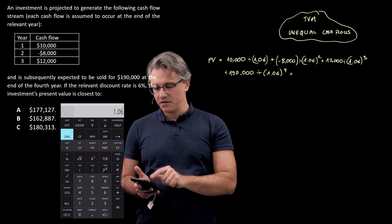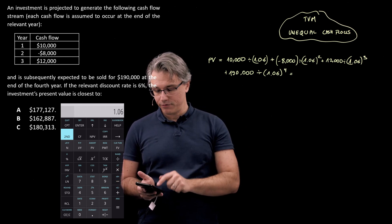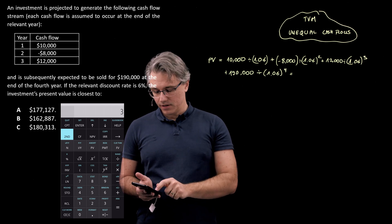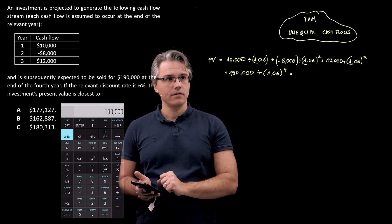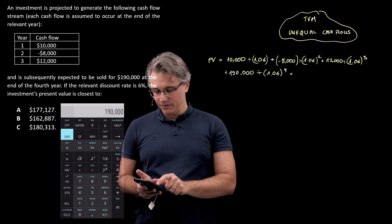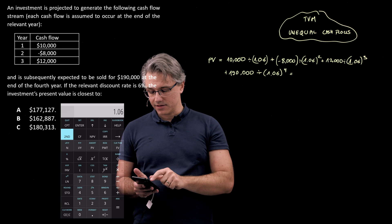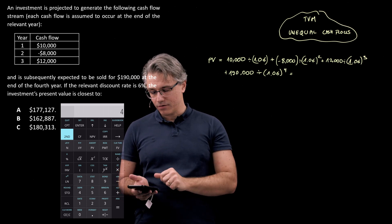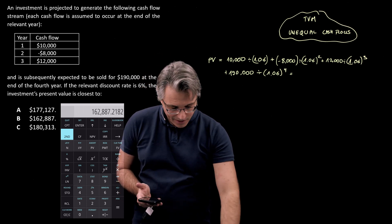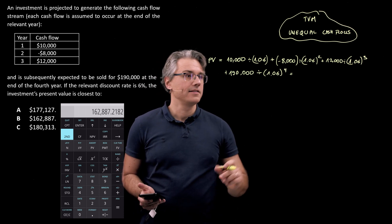Plus 12,000 divided by 1.06. Now, y to the power of x key and the power 3, plus 190,000. Okay, divided by 1.06, y to the power of x key and the power is 4, equals. And I've got an answer of 162,887.